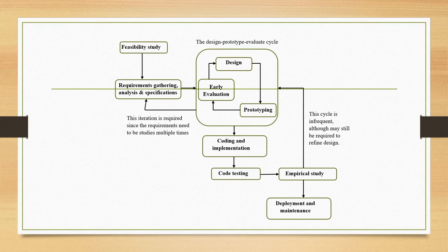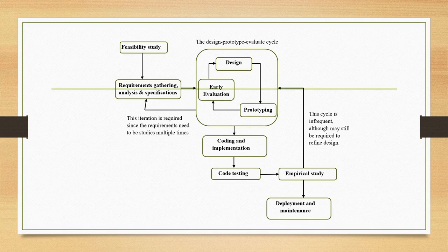We are talking about design and implementation of software systems which are interactive systems. In order to go for a systematic design approach, we learned about design life cycles. For interactive systems, we learned about a specific design life cycle that we are following in this course. Let us quickly recap the stages of the design life cycle.